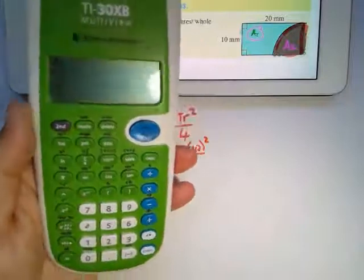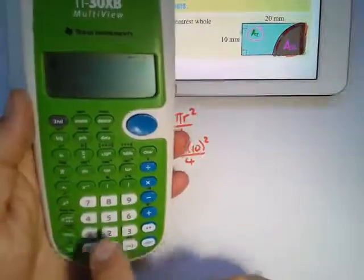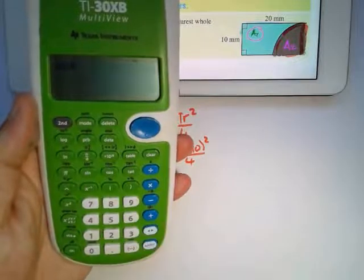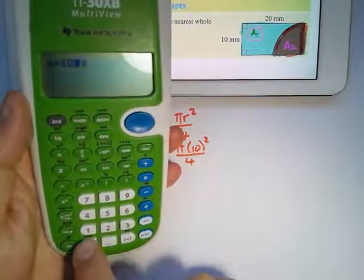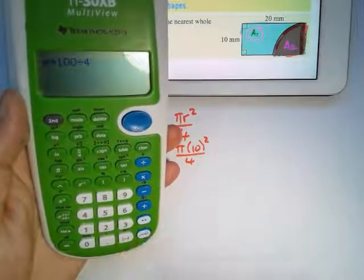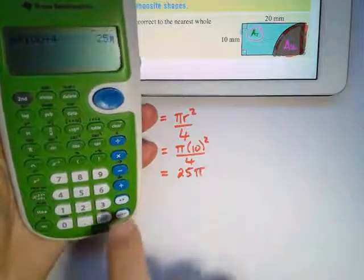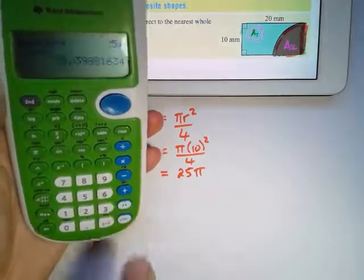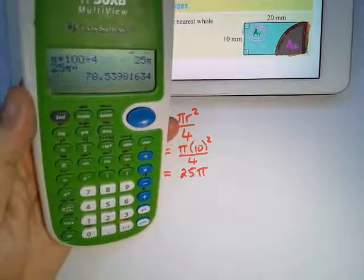What I'm going to do is I'm going to say π times 10 squared, 10 times 10 is 100, divide by four. To two decimal places that's going to be 25π. Remember if I want to get a value I'm just going to press 25π and that gives us 78.539.